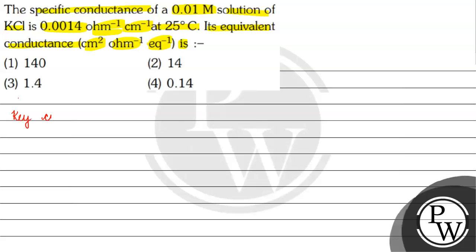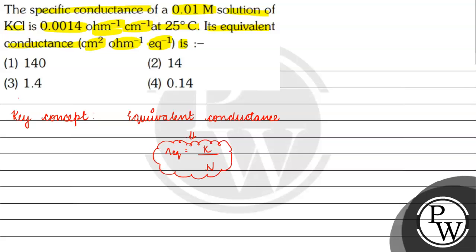The key concept for this question is equivalent conductance. Equivalent conductance — its formula is: kappa (which is specific conductance) divided by n, where n is normality.